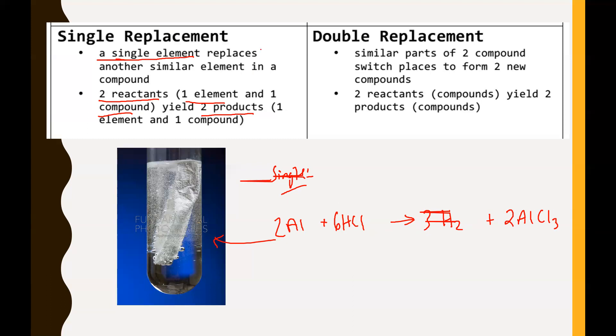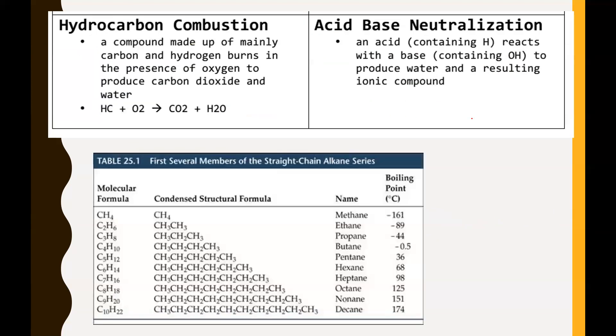The other type, of course, double replacement reaction. This is where you have two compounds and similar parts of them, so in other words, the cations in those two compounds are going to switch places to form two new compounds. So again, this will look like two reactants, both of which are compounds, yielding two products, both of which are compounds.